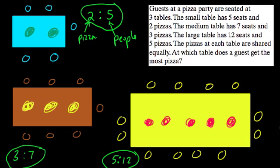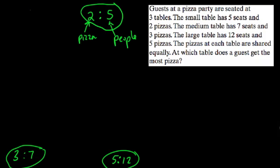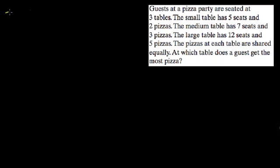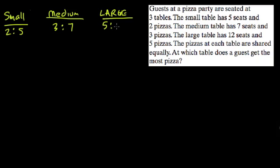So we're looking for the highest ratio of pizza to people. At the small table: two pizzas for five seats, so it's two to five. Medium table: three pizzas for seven people. Large table: five pizzas for twelve people.